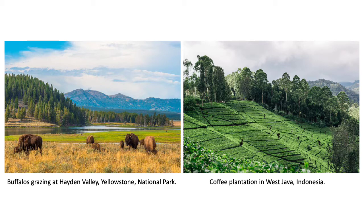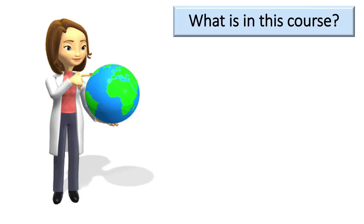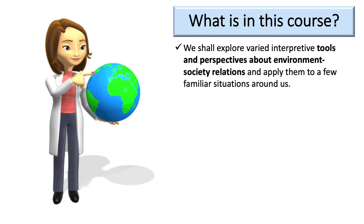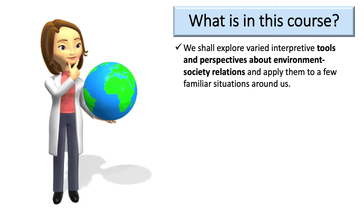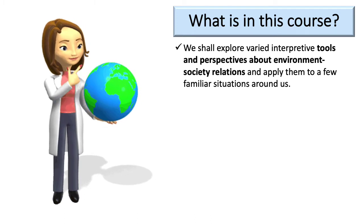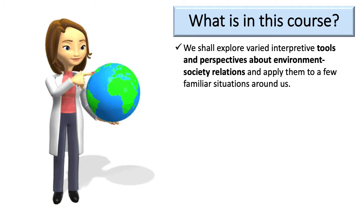These situations imply that, although humans have exerted enormous influence on the Earth, its complex ecology makes it very difficult to fully control our environment. So, in this course, we shall explore varied interpretative tools and perspectives about environment and society relationships, and apply them to a few familiar situations around us.